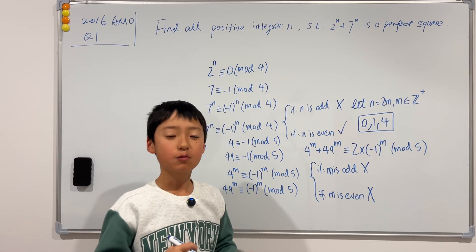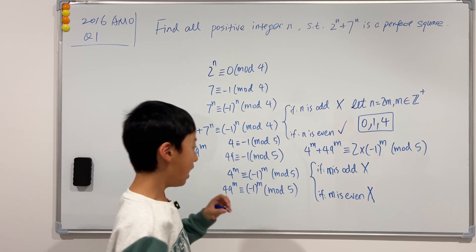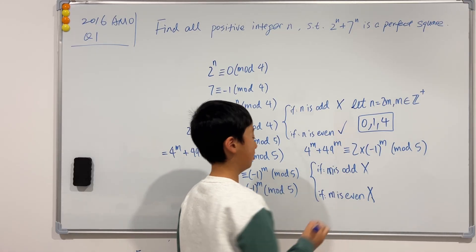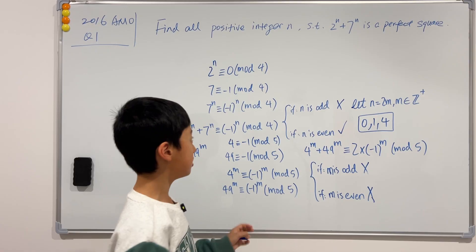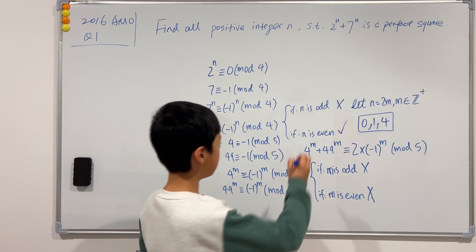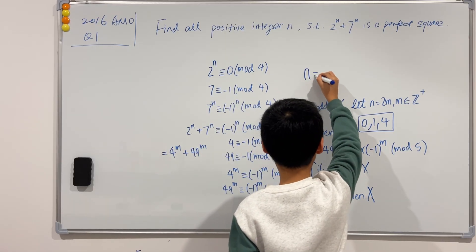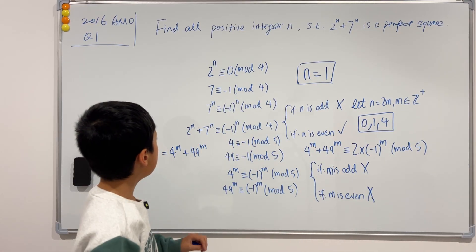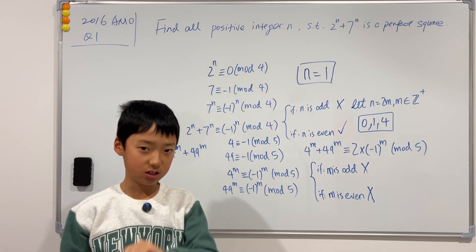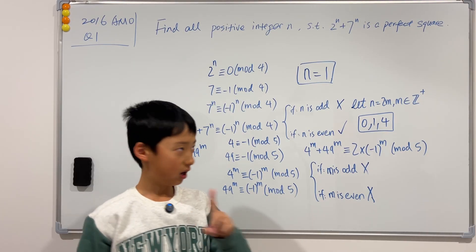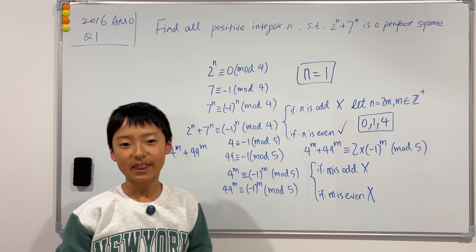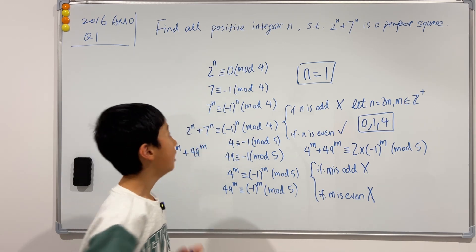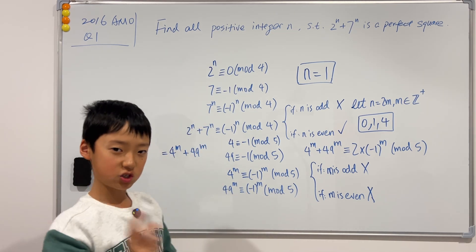So you know that the only possible solution is when n is just equal to 1. So we have found all of the positive integers, but there is only 1, which is 1. So this is the final answer of the 2016 AMO question 1.